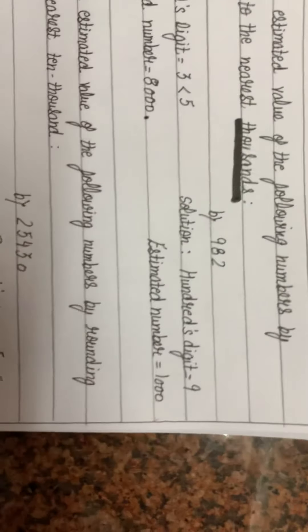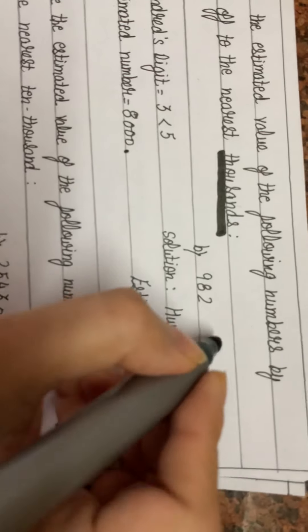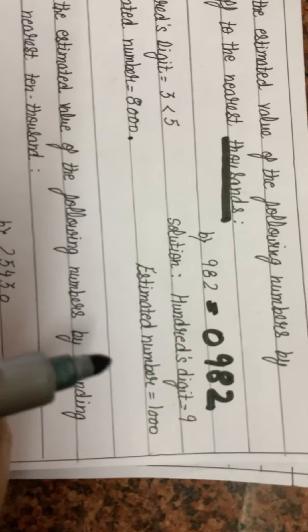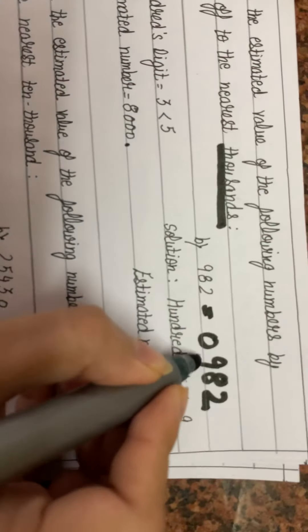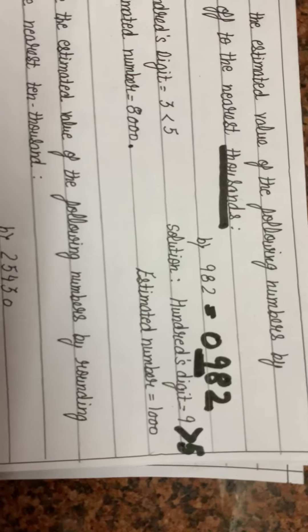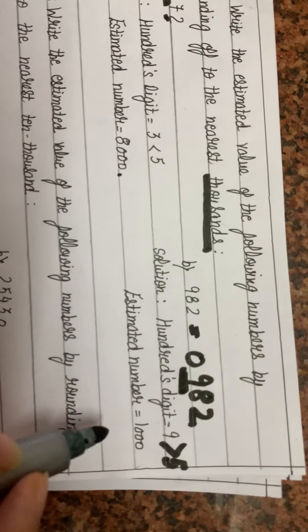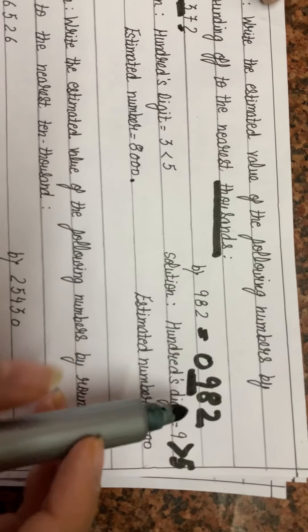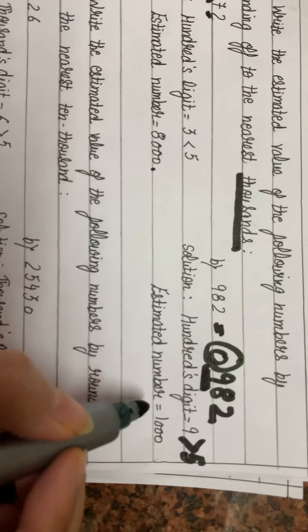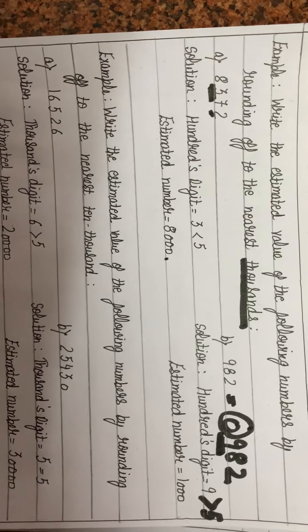Consider 982. We can write it as 0,982. The digit at hundreds place is 9, which is greater than 5. We replace ones, tens, and hundreds digits by 0, and increase the thousands digit by 1. Zero plus 1 is 1. So the estimated number is 1,000.